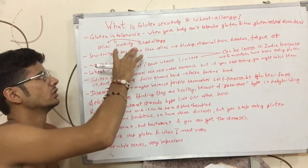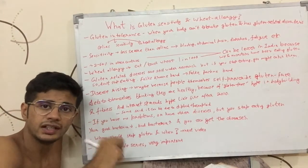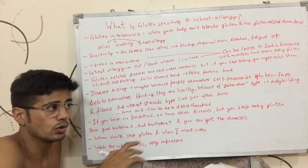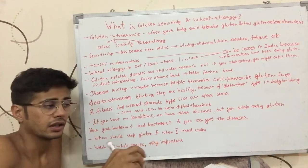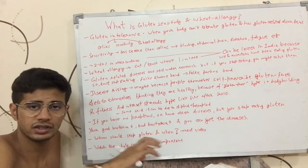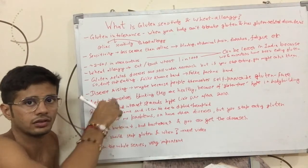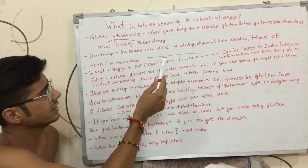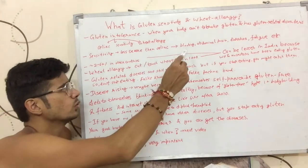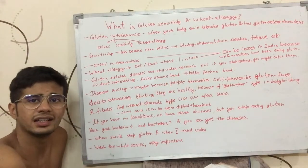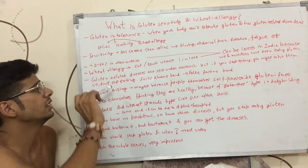The third one is wheat allergy. When you eat wheat, your body faces problems — even just by going into a farm where there is a wheat crop and exposing yourself to such a place, you can have a wheat allergy. In wheat sensitivity, the symptoms are somewhat similar to those of celiac disease: you have bloating, abdominal pain, diarrhea, fatigue, and many other issues.